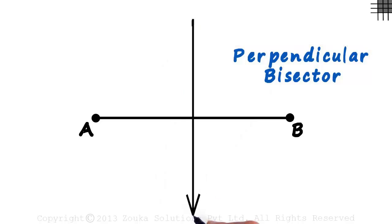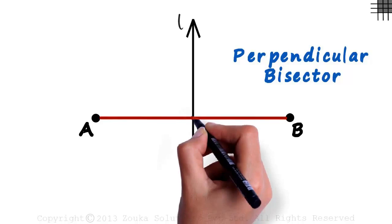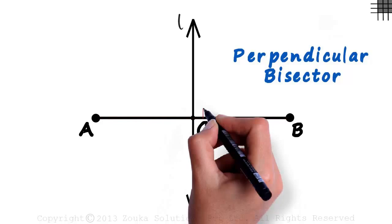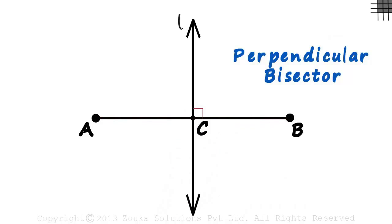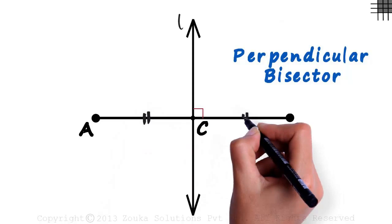Let line L be the perpendicular bisector of this segment and say it intersects AB at point C. This will be a right angle, and length of AC will equal length of BC.